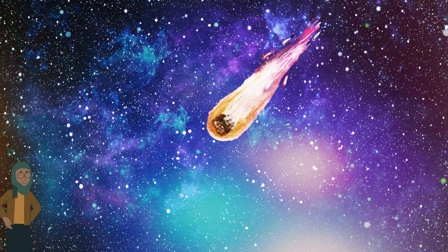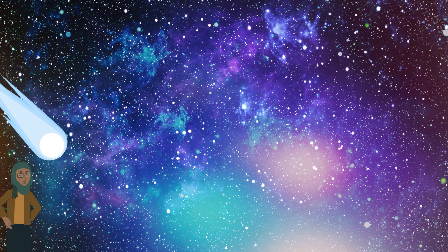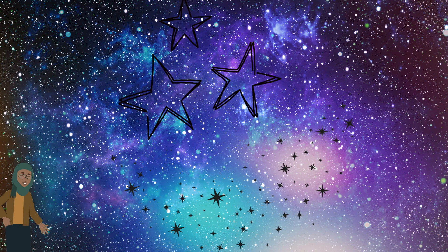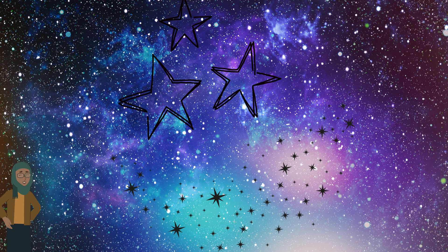And here's our buddy, the comet. Comets are like icy snowballs with tails. When they come close to the sun, they light up and look like shooting stars. It's like nature's fireworks show.